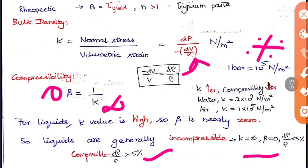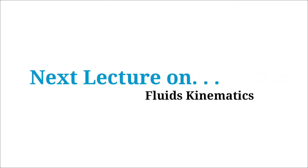Regarding how K varies with pressure and temperature: when pressure increases, K increases for both liquids and gases. When temperature increases, K decreases for liquids (inversely proportional) but increases for gases (directly proportional). This completes the properties of fluids. The next lecture will cover fluid kinematics.